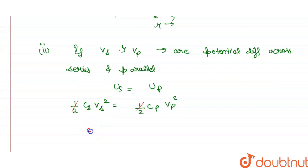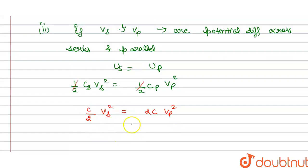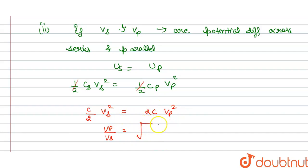Substituting, in series the capacitance is C by 2 and in parallel it is 2C. So we get: (C/2) times Vs squared equals 2C times Vp squared. Rearranging, Vs squared by Vp squared equals 4, so Vs by Vp equals 2. Therefore the ratio Vs to Vp is 2, or equivalently Vp to Vs equals 1 by 2. This is the answer for the two parts.